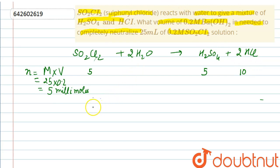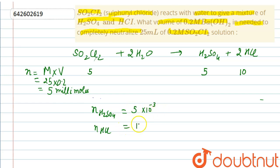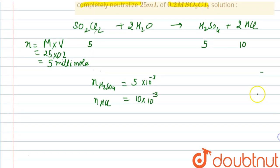So we have 5 × 10⁻³ moles of H₂SO₄ and 10 × 10⁻³ moles of HCl. Now neutralization reactions take place between Ba(OH)₂ (barium hydroxide) and these two acids.